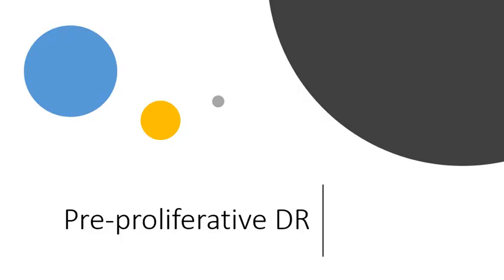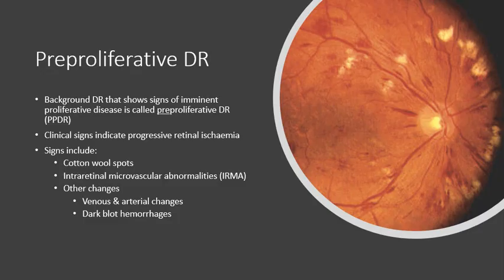The next category is pre-proliferative diabetic retinopathy. Any background diabetic retinopathy that shows signs of imminent proliferative disease is termed pre-proliferative diabetic retinopathy, or PPDR. The clinical signs indicate progressive retinal ischemia. Signs include cotton wool spots, intra-retinal microvascular abnormalities (IRMA), vein and artery changes, and dark blot hemorrhages. The risk of progressing to proliferative DR depends on the number of lesions, and a patient can have proliferative disease in one eye and pre-proliferative in the other.